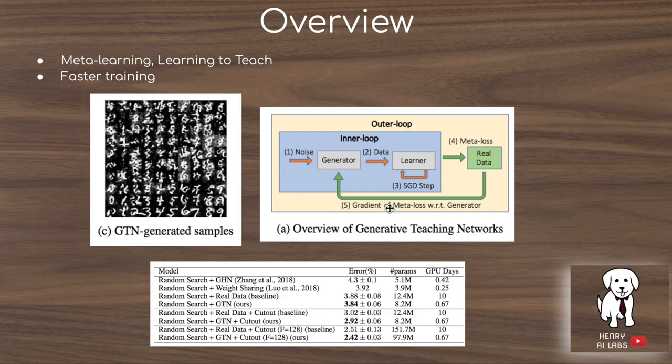The other idea here is faster training. In the paper, they describe how they set 32 batches of 128 images — so 4,096 different samples in the dataset — optimized to train as quickly as possible. Having this way of training the child network as quickly as possible is really useful for neural architecture search.